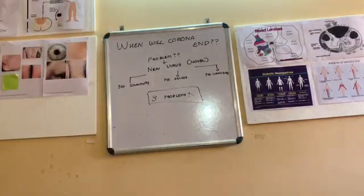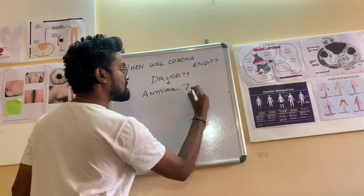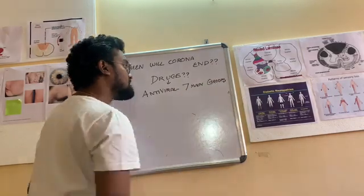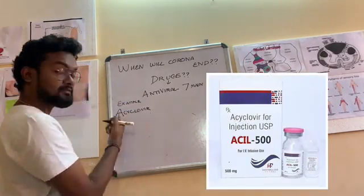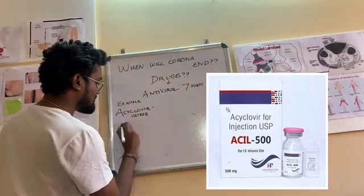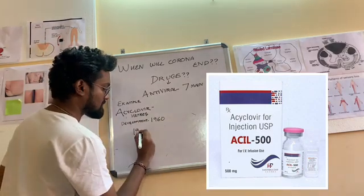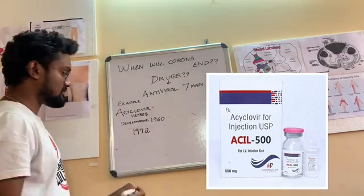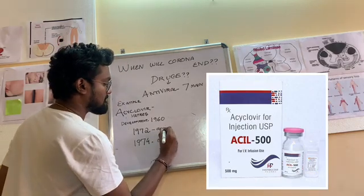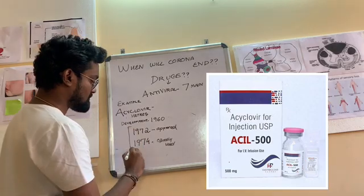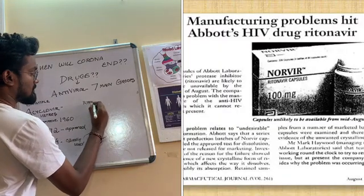The first problem is obviously the drugs. There are totally seven groups of antivirals that can be used in various other diseases. I will give you an example. First example is Acyclovir. This Acyclovir was first developed in 1960 against Herpes. The development started in 1960. It was approved in 1972 and came into the market in 1974. So it took nearly 12 years to come into the market, although the production years was around four years.